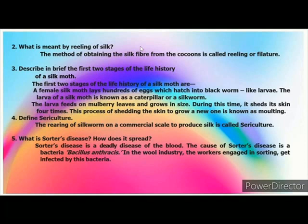The female silk moth lays eggs which hatch into black worm-like larvae. The larvae of a silk moth is known as a caterpillar or a silkworm. The larvae feed on mulberry leaves continuously and grow in size. During this time, it sheds its skin four times. This process of shedding the skin to grow a new one is known as moulting.